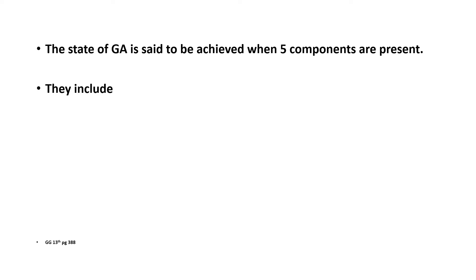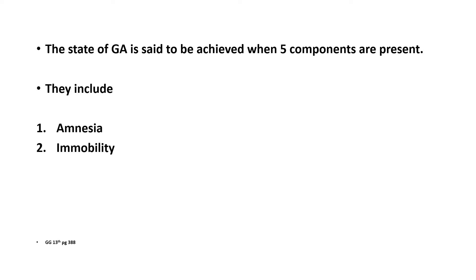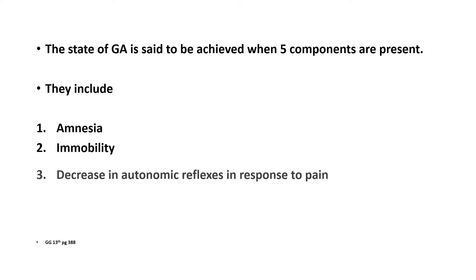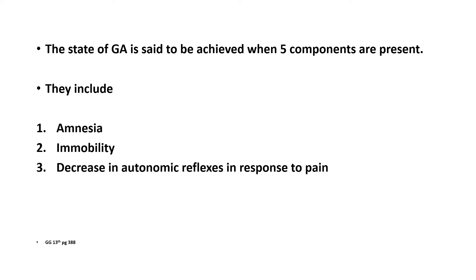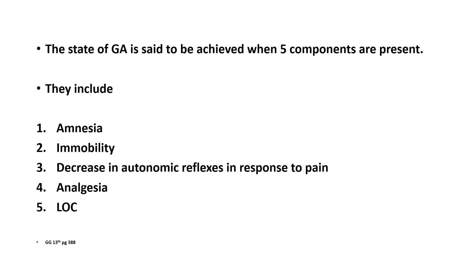The state of general anesthesia is said to be achieved when five components are present, and they include amnesia, immobility, decrease in autonomic reflexes in response to pain, analgesia, and loss of consciousness.